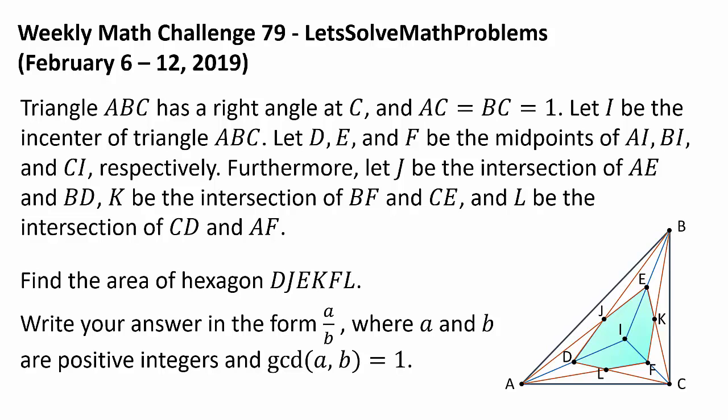Furthermore, let J be the intersection of AE and BD, K be the intersection of BF and CE, and L be the intersection of CD and AF. Find the area of hexagon DJEKFL, which is shaded in the diagram, and please write your answer in the form A divided by B, where A and B are positive integers, and the greatest common divisor of A and B is 1.